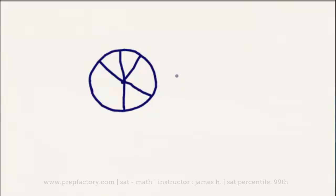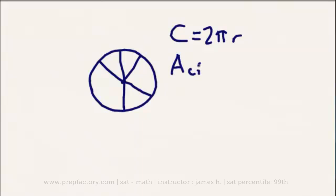Let's talk about some of the basics of circles. The circumference of any circle — basically what we call the perimeter in another shape, the length around the edges — is going to be equal to 2πr, where r is the radius. And the area of any given circle is going to be equal to πr². If any of you are taking calculus, you'll recognize that the circumference equation is the derivative of the area equation.